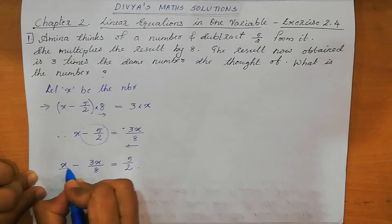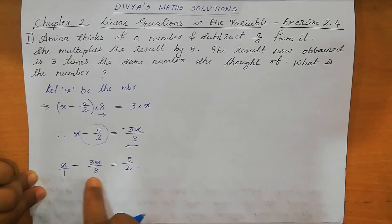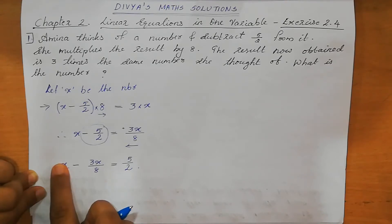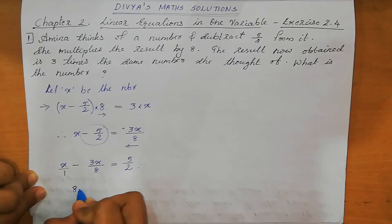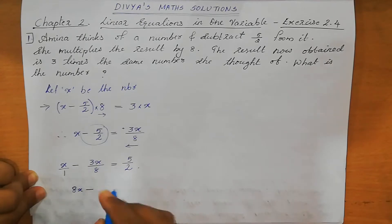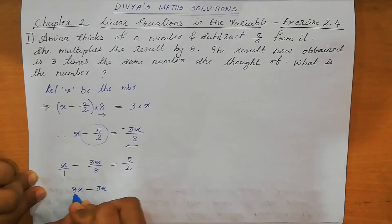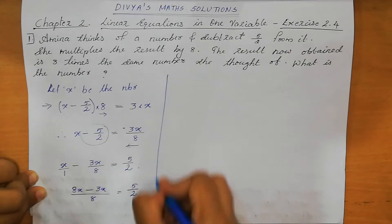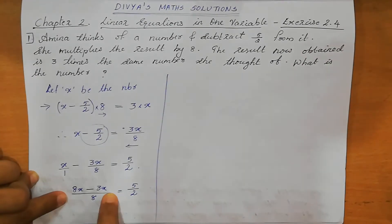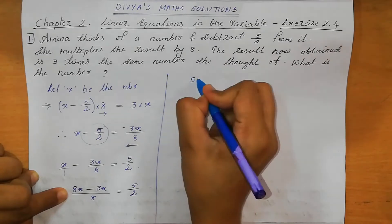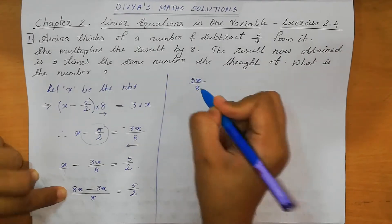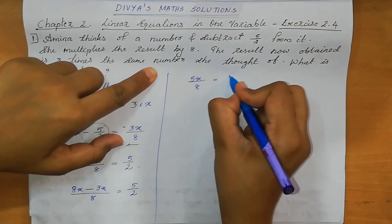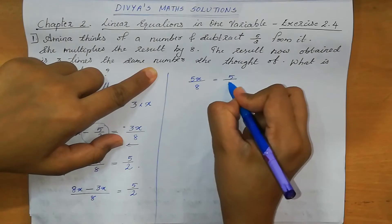X means X by 1. So what is the LCM of 8? Otherwise cross multiply: 8 into X gives 8X, minus 1 into 3X gives 3X, the whole divided by 8 equal to 5 divided by 2. So 8X minus 3X is 5X. 5X divided by 8 equal to 5 by 2.